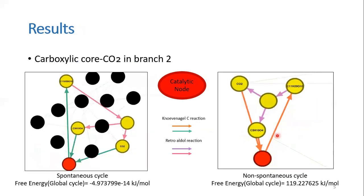Here are the snapshots of CO2 as part of branch 2 in both the scenarios again. The inference is that because of the chemistry of the reactions, the carboxylic core is a constant, but the connecting reactions decide whether or not the cycle can run on its own.